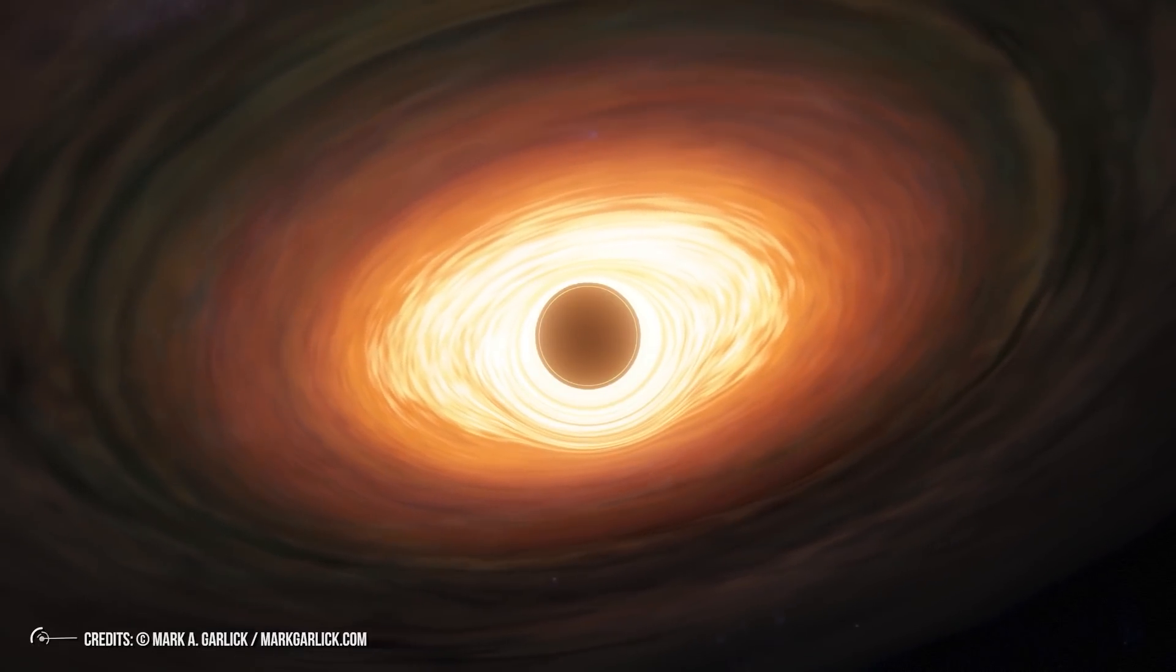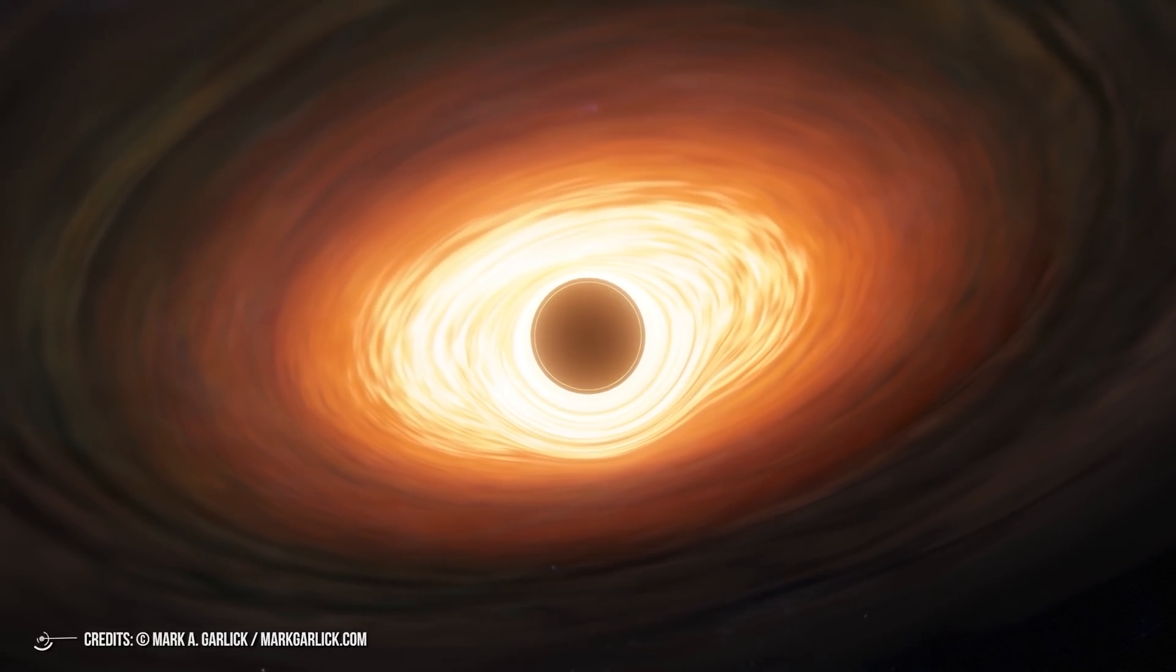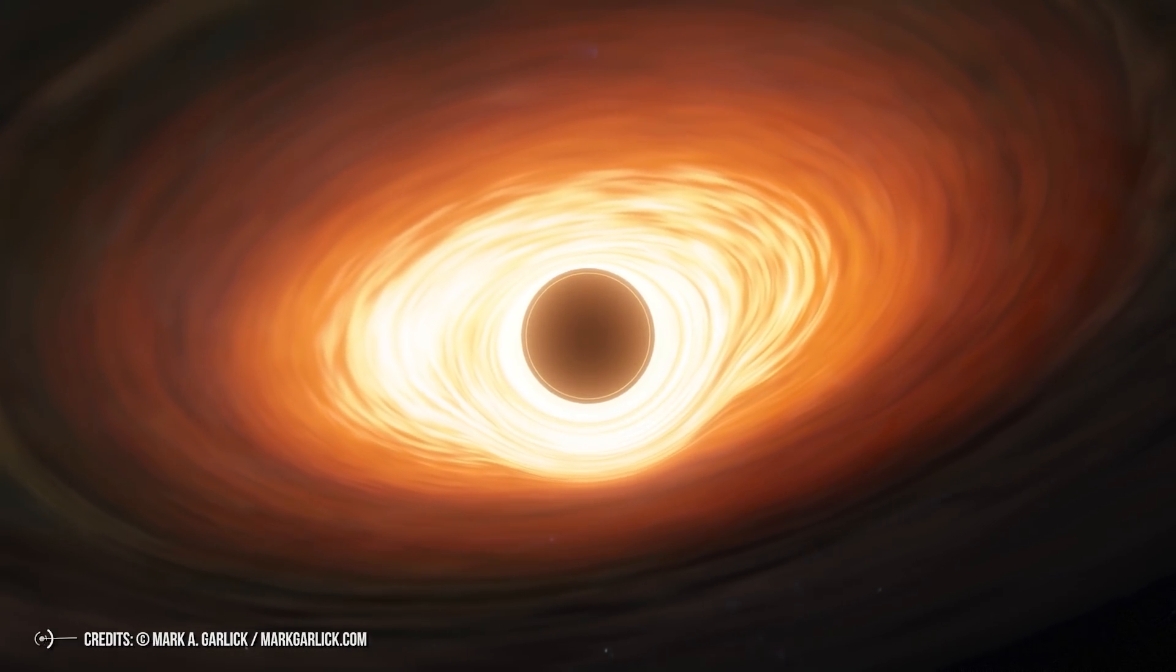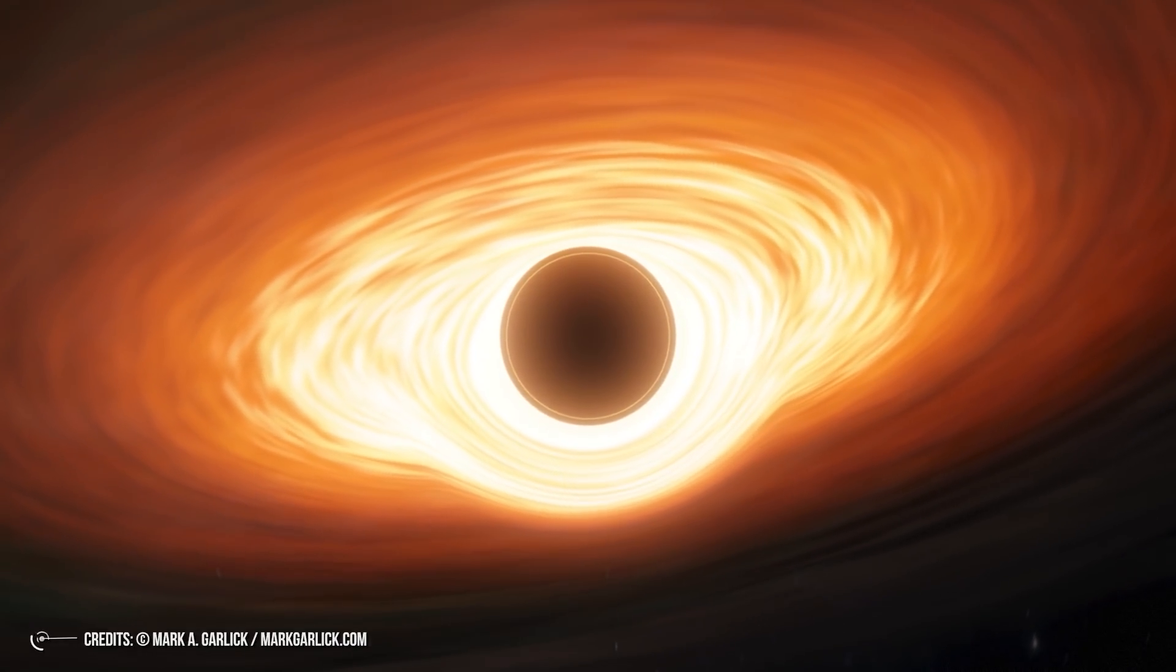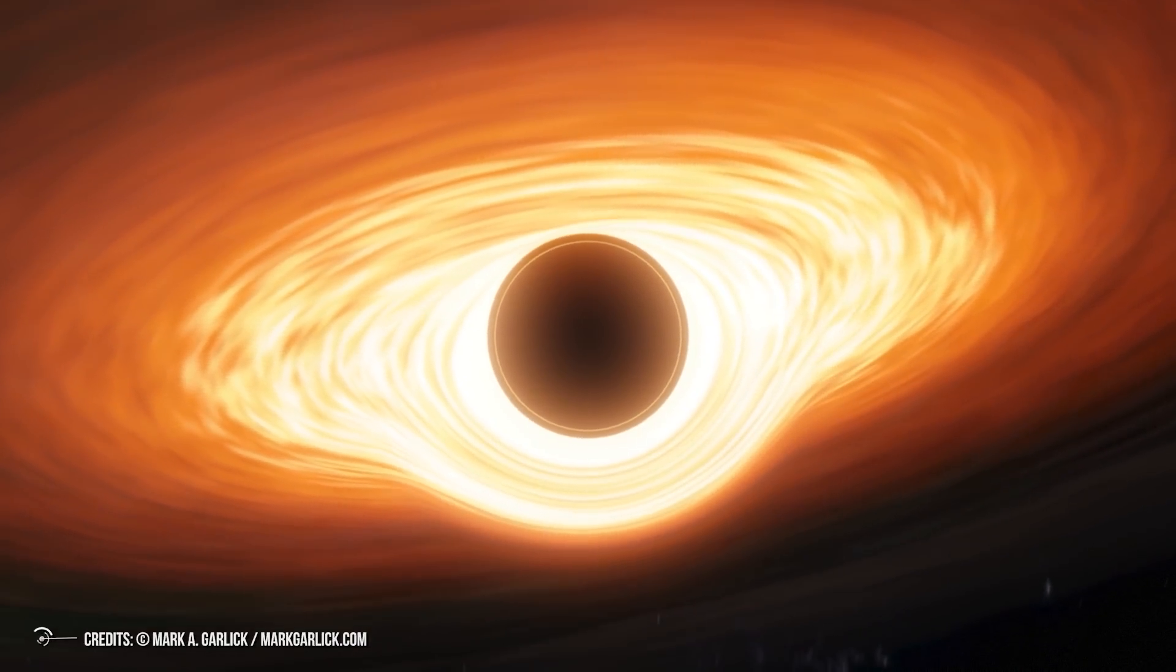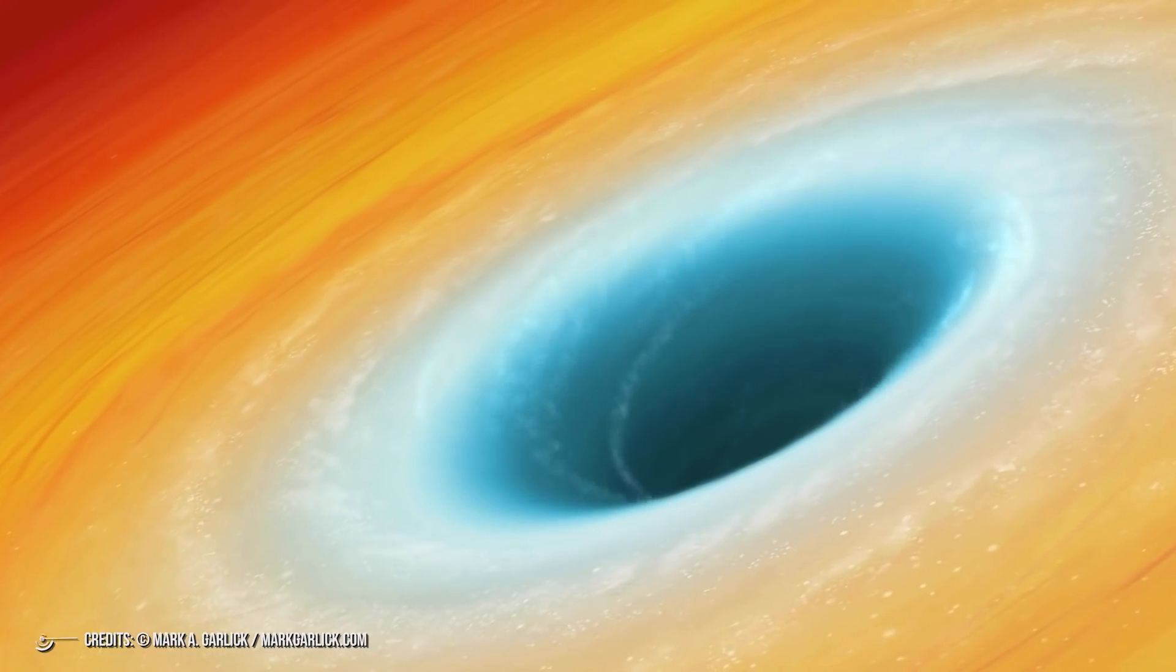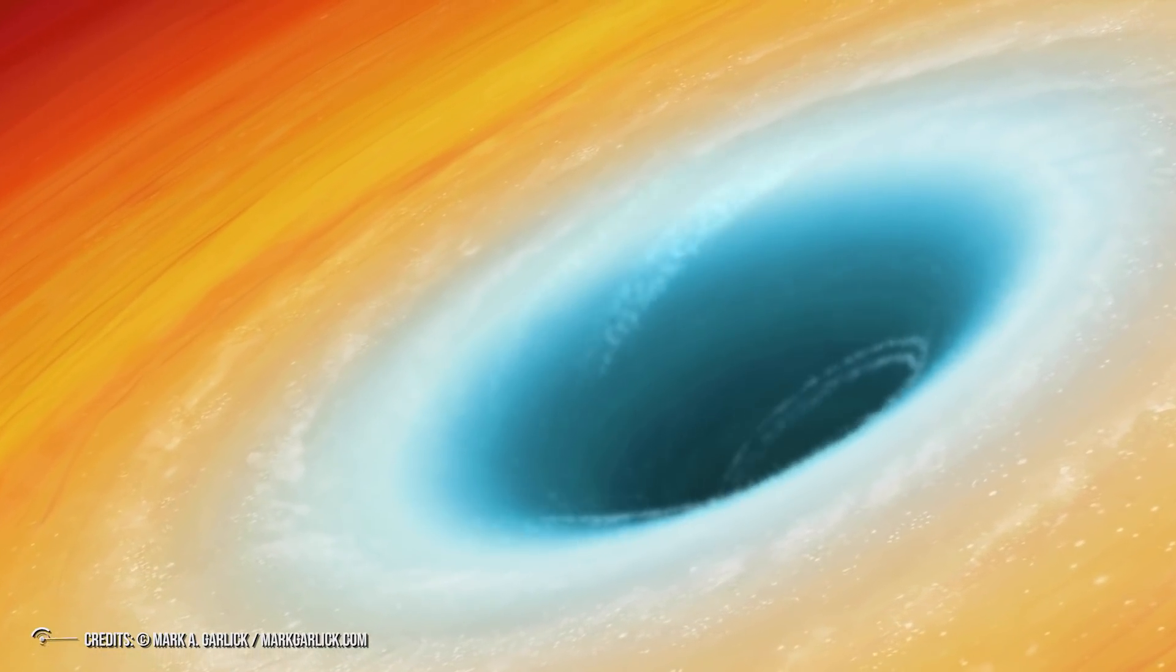The existence of such objects was predicted before we had observed one. We had never seen a black hole before the Event Horizon Telescope showed us M87-plus' event horizon, and yet we somehow knew that we would be able to see it one day because that's what math tells us, that black holes exist. In fact, the existence of black holes is a consequence of the general relativity theory. But it is not the only one.